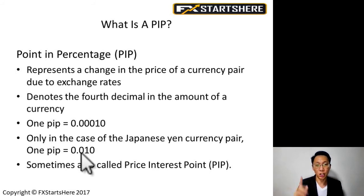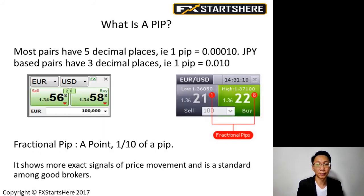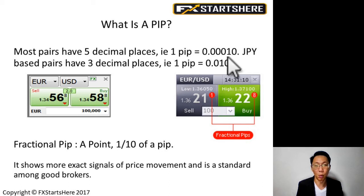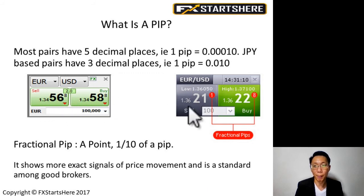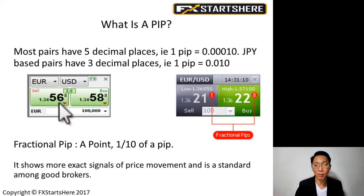Most pairs have five decimal places, so one PIP equals 0.0001. Japanese Yen pairs are based at three decimal places, so one PIP is 0.01. For most currency pairs, for example EUR/USD, you'll see quotes like 1.34568 or 1.36211 — those are five decimal places. This brings us to the fractional PIP.